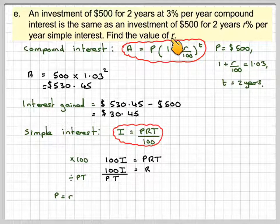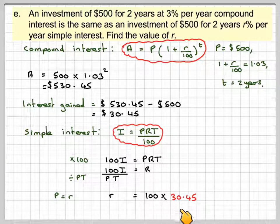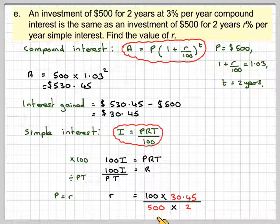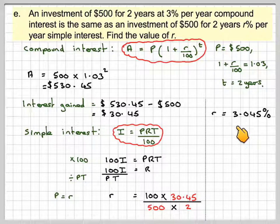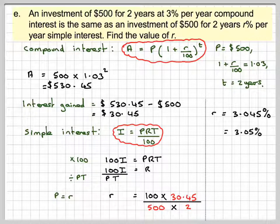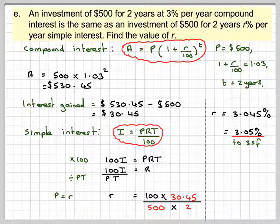So we're going to have R is going to be 100 times the interest, which is 30.45, divided by 500 times 2. That gives me R is equal to 3.045%, which gives an interest rate of 3.05% per annum to three significant figures for simple interest.